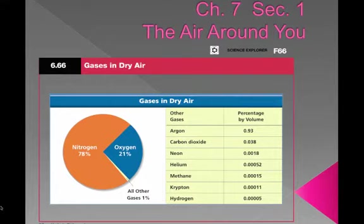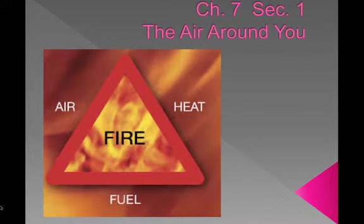Even though oxygen is the second most abundant gas in the atmosphere, it makes up less than one-fourth of the volume. When something burns, the fuel in the object combines with oxygen in the air to produce heat. This graphic is called the fire triangle. For fire to occur, all three sides must be present: air, fuel, and heat.